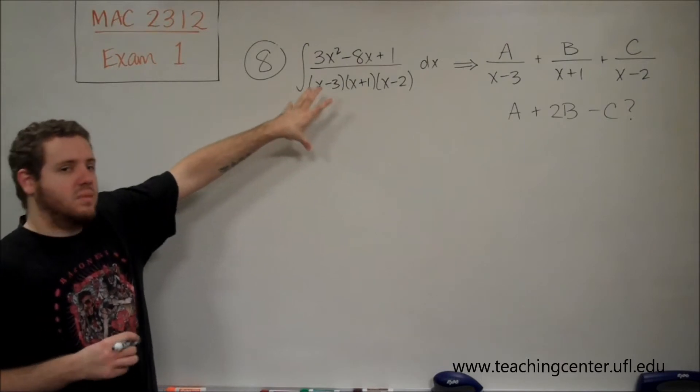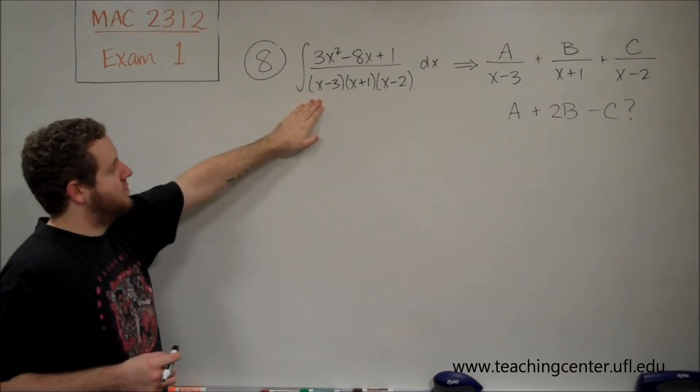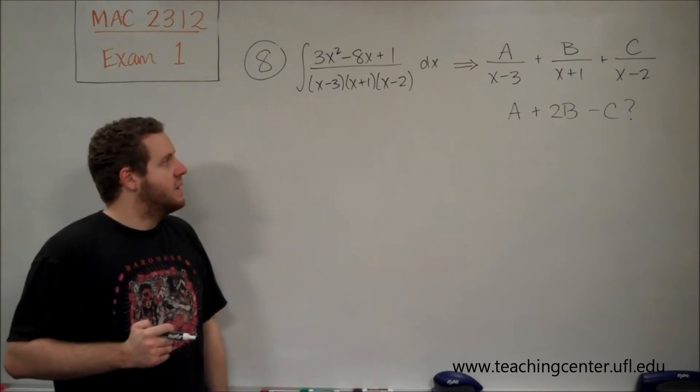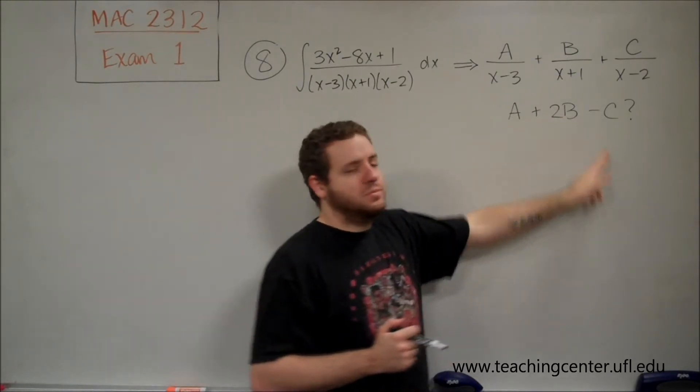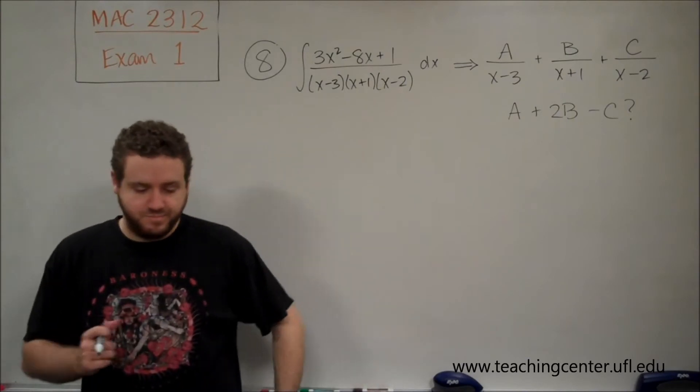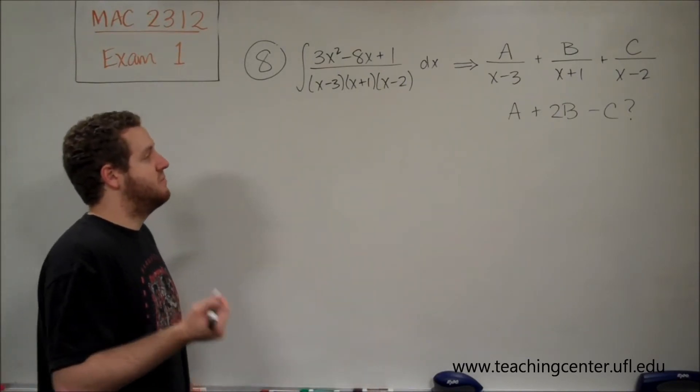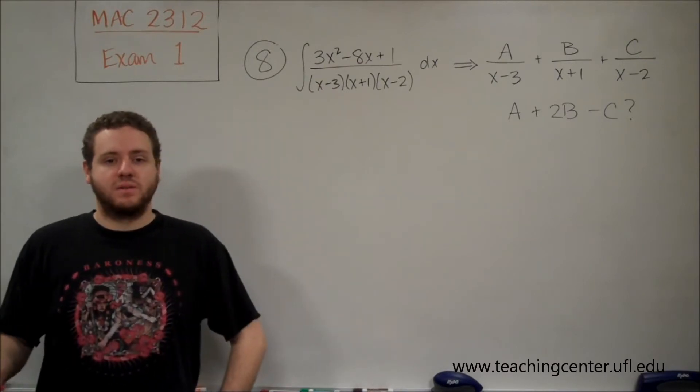Now, in this case, the setup work was done for you, it's already factored, it's already split up into the partial fractions, but we're asked to figure out what is a plus 2b minus c. So, what we need to do first is just figure out a, b, and c, then do that algebra.